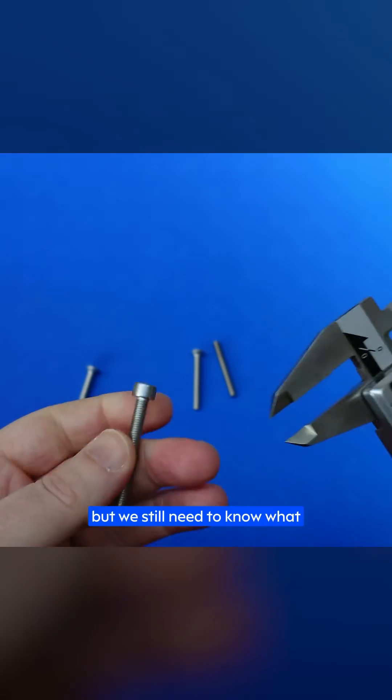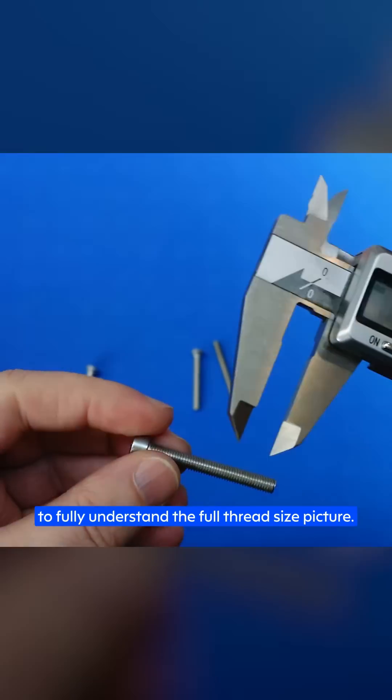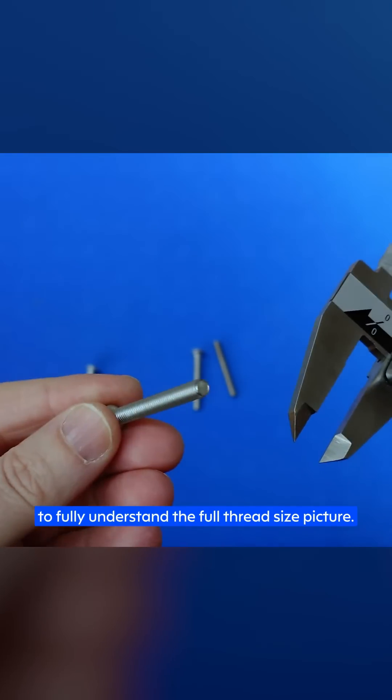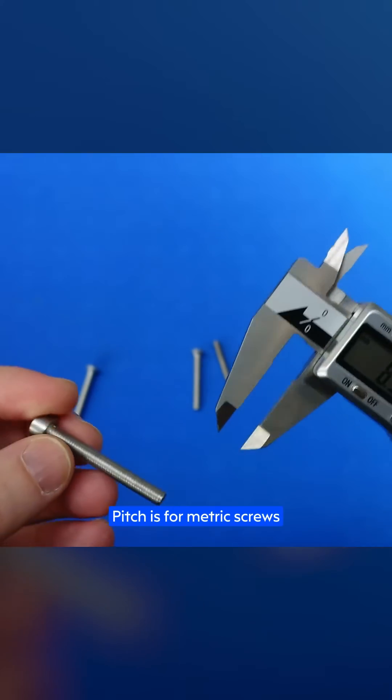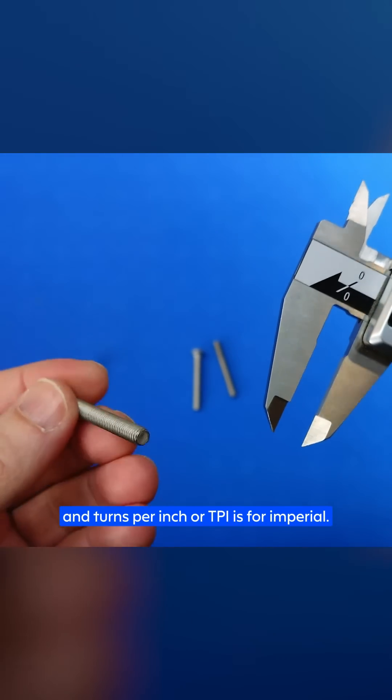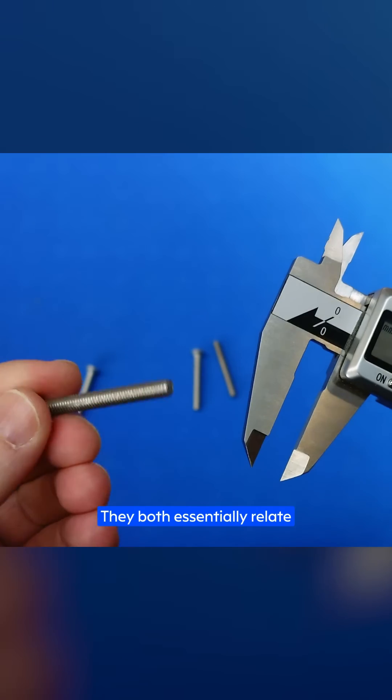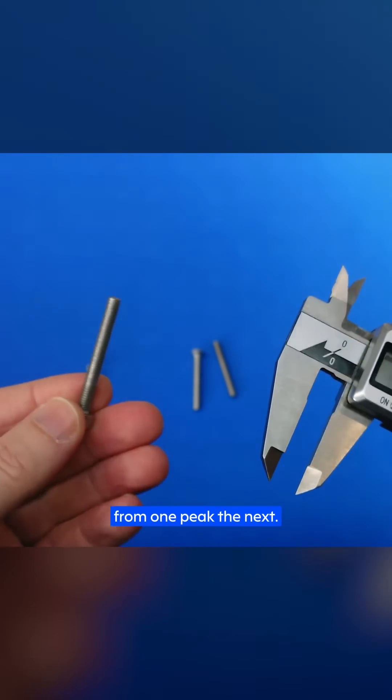So we now know our diameter, but we still need to know what the pitch or TPI is to fully understand the full thread size picture. To begin with, pitch is for metric screws and turns per inch, or TPI, is for imperial. They both essentially relate to the spacing between each thread from one peak to the next.